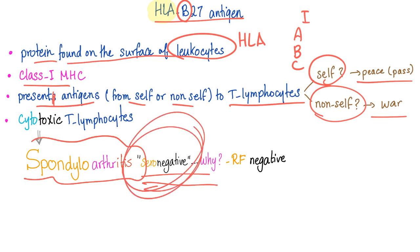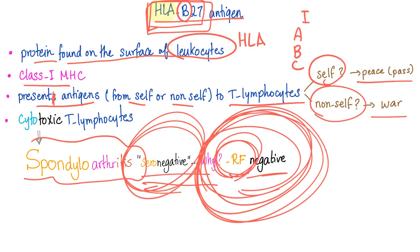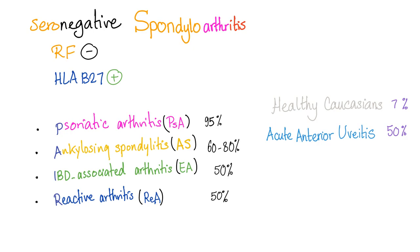Seronegative spondyloarthropathies — why do we call them seronegative? Because they are negative for rheumatoid factor. They are positive for HLA-B27 but negative for rheumatoid factor, that's why we call them seronegative spondyloarthropathies. They are: psoriatic arthritis, ankylosing spondylitis, inflammatory bowel disease-associated arthritis (also called enteropathic arthritis), and reactive arthritis. Some students use the mnemonic PEAR.